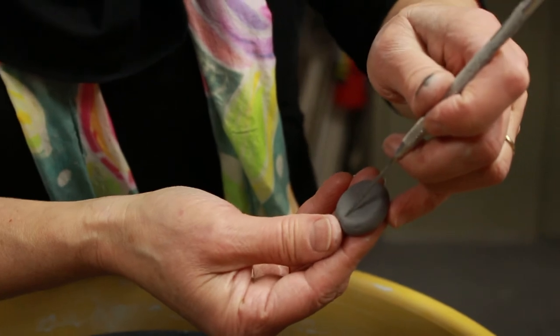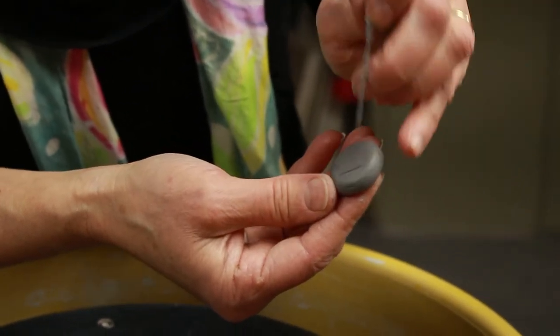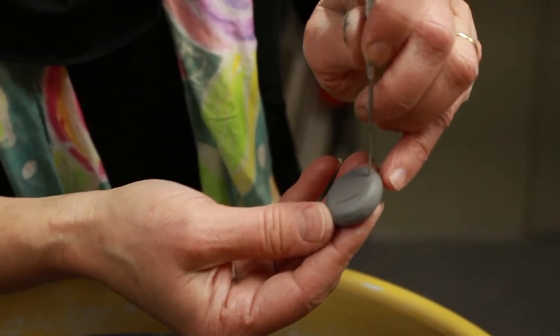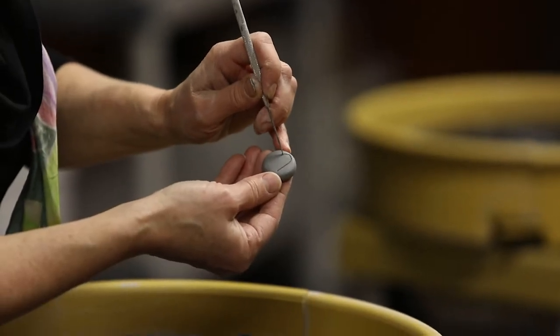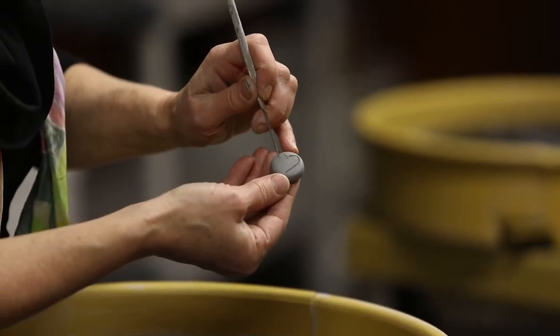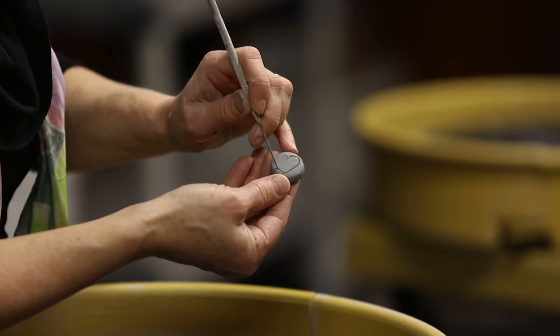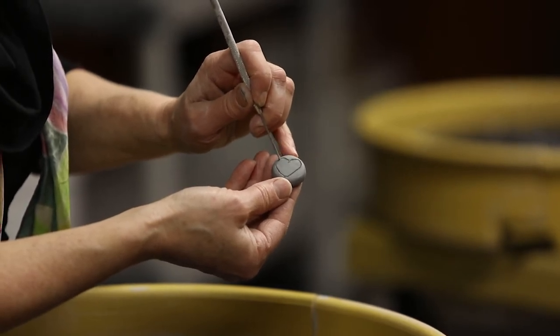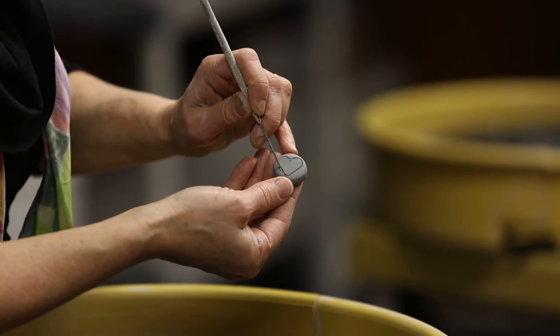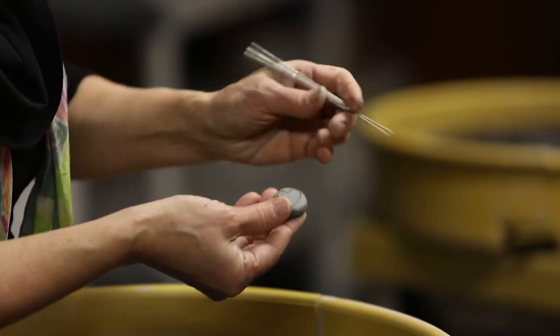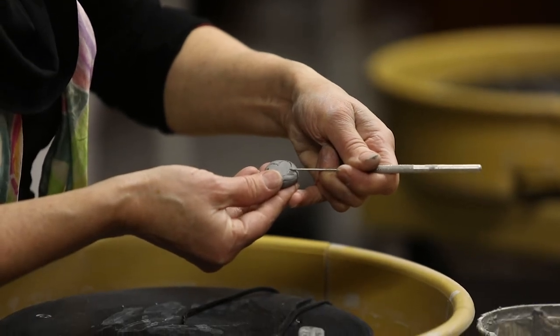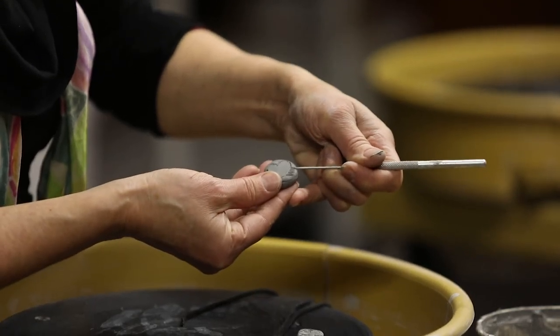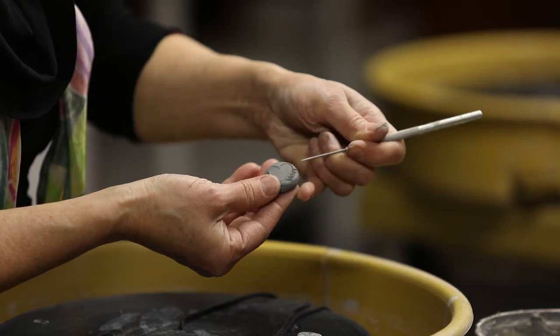And then I'm going to draw a line outlining what I want to show. Just going to draw that nice and slightly. There we go. And now I'll use my tool, my needle tool, to texture the background and make the image pop.